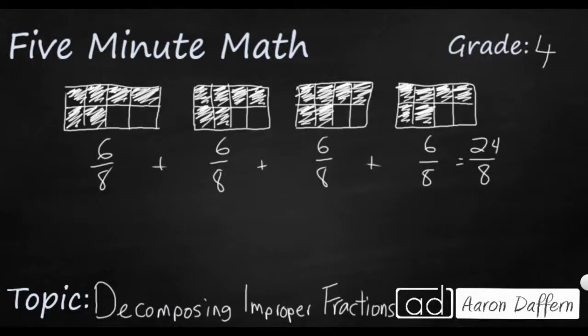So actually, you could say 8 eighths plus 8 eighths plus another 8 eighths. That would equal the same amount, the 24 eighths. How would that work?